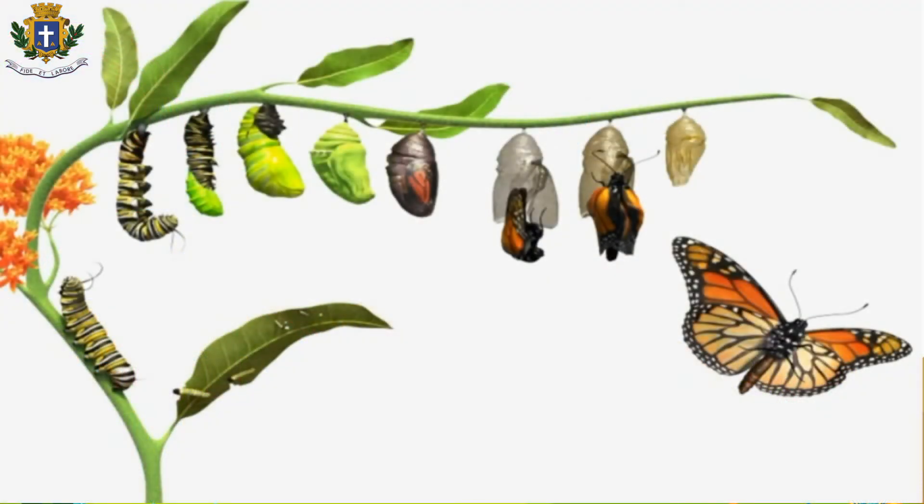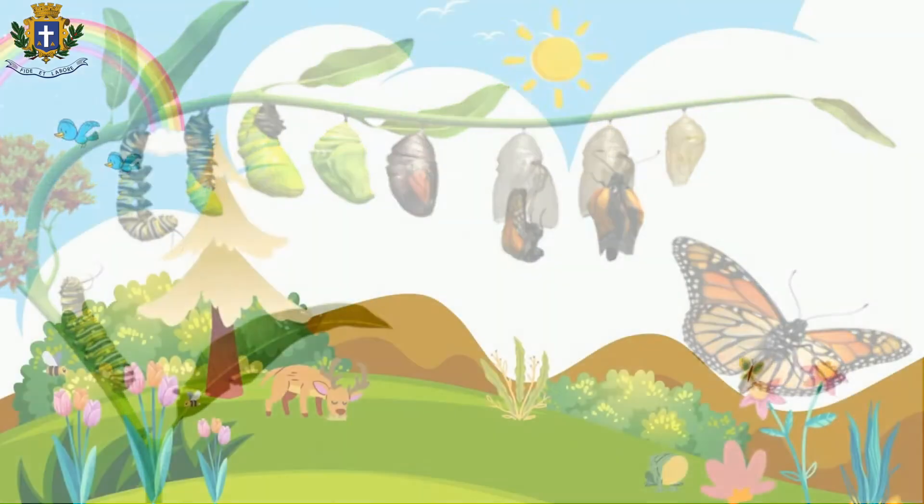Metamorphosis is a Greek word that means transformation or change in shape. The life cycle, as it is called, consists of four main stages. By the end of this video, you will be able to understand the life cycle of a butterfly and its four developmental stages.